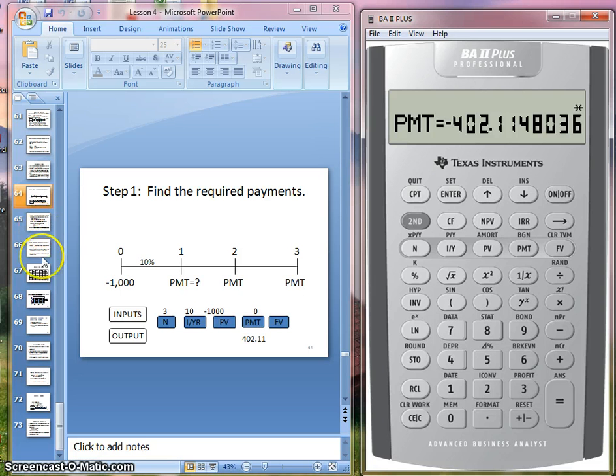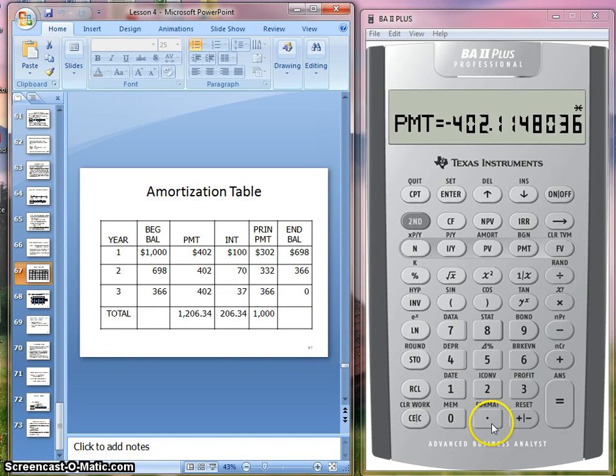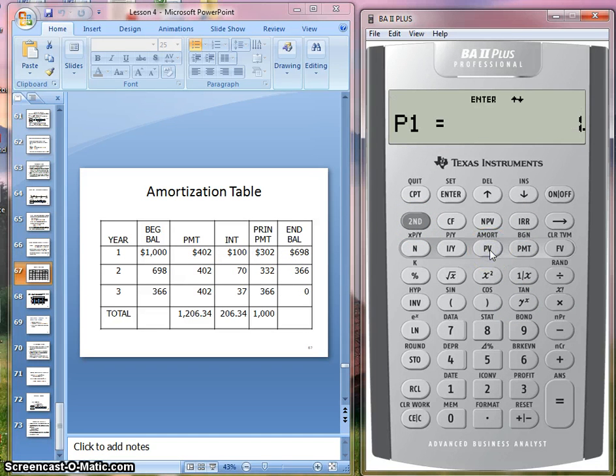Now, we're going to take a look at the amortization table and see if we can get these results from the calculator. What you want to do is second amortization, and the first thing you see is P1 equals 1.